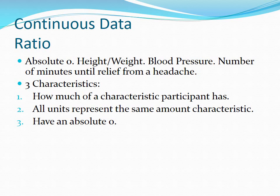Next we move on to continuous data, which is just what the word says — continuous. The first of two categories is ratio. Ratio has three distinctive characteristics. The first is how much of a characteristic the participant has. For example, if a researcher measures someone's height at 75 inches, the participant has 75 units called height. The second characteristic is that all units represent the same amount of that characteristic — the difference between 60 and 61 inches is the same as the difference between 70 and 71 inches. The measurement is the same, although the numbers are not.